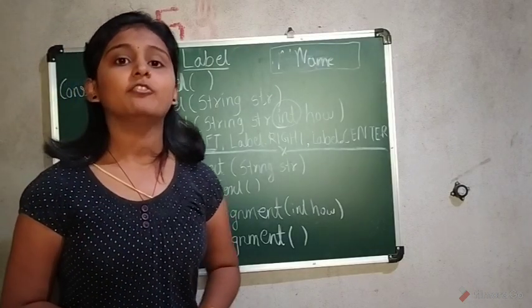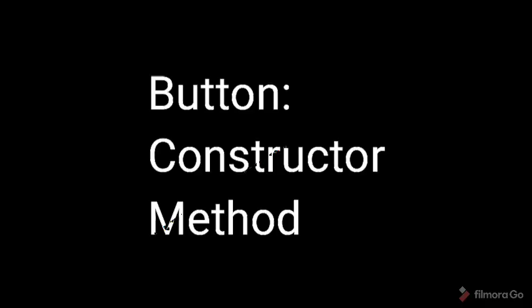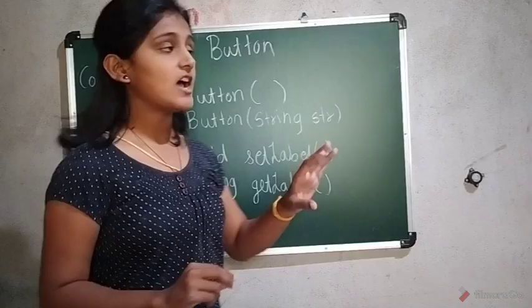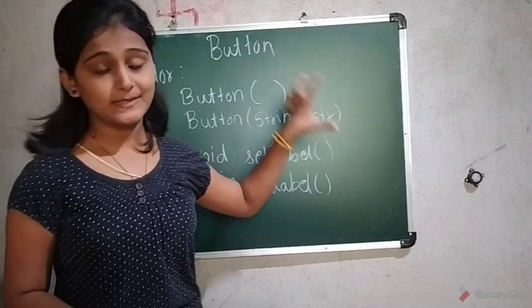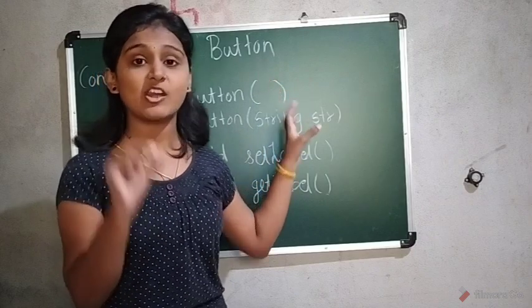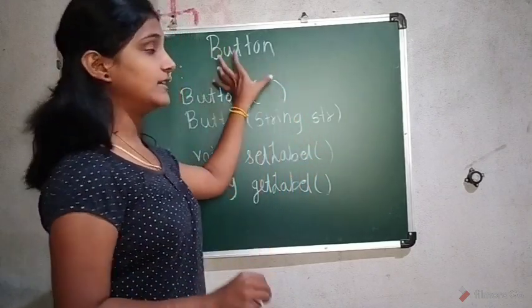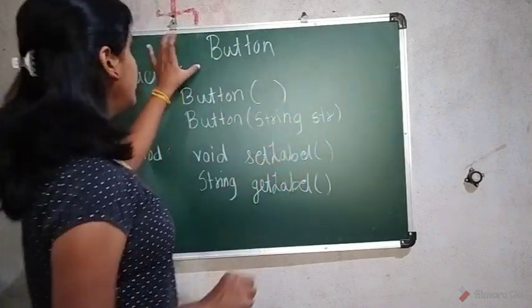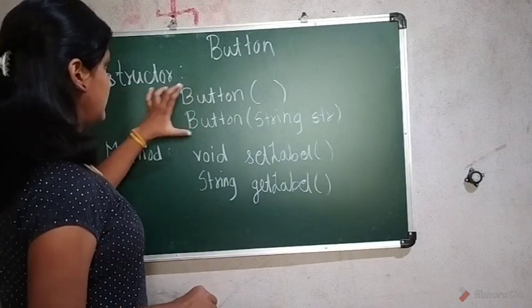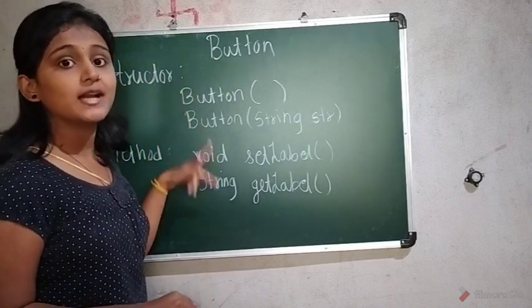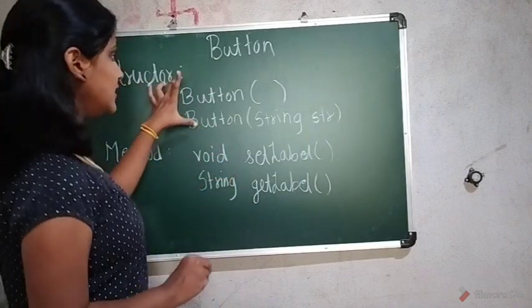Now next we will see of button. Now we will see here of button, which is the class, which is the component which comes under java.awt. It is a class of AWT. Now here button regarding the constructor, here button contains two constructors and two methods.